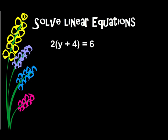We're going to solve this linear equation. Remember, solve means I want to get the variable — in this case, y — by itself, equal to a number. Well, when we have a parenthesis, remember, we're going to be using the distributive property. So I need to take 2 times everything within the parenthesis. So 2 times y is 2y, 2 times a positive 4 is a positive 8, and it's going to equal 6.